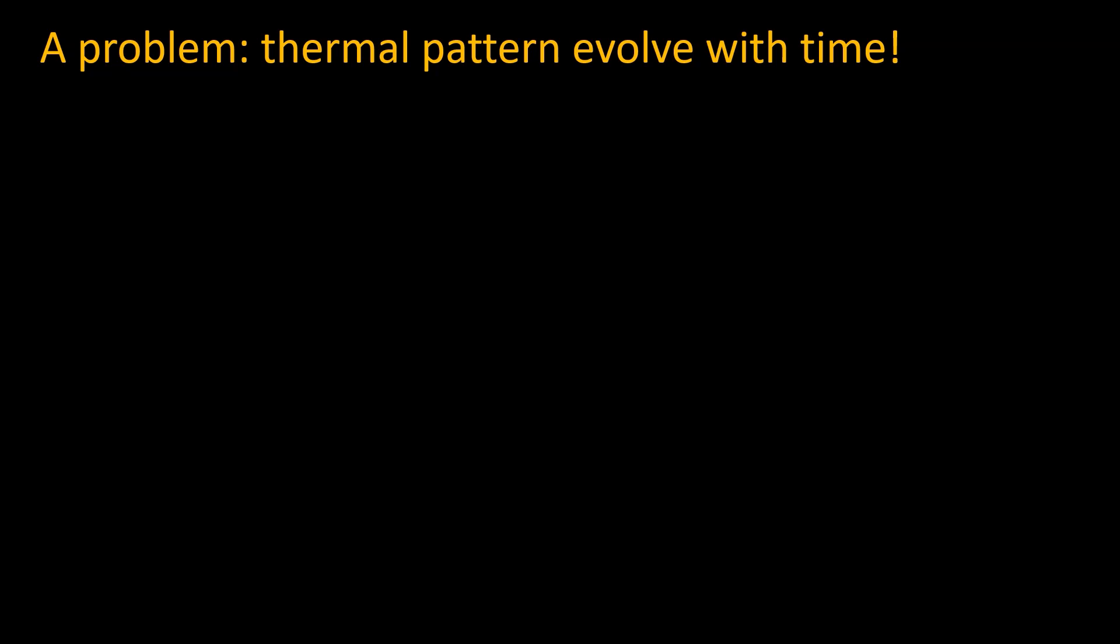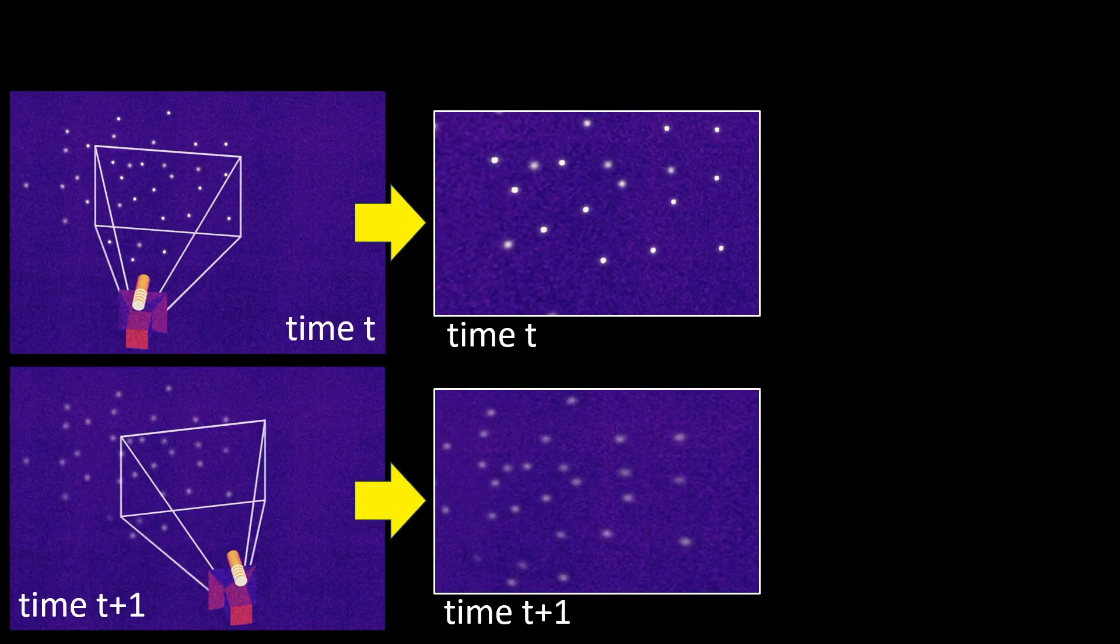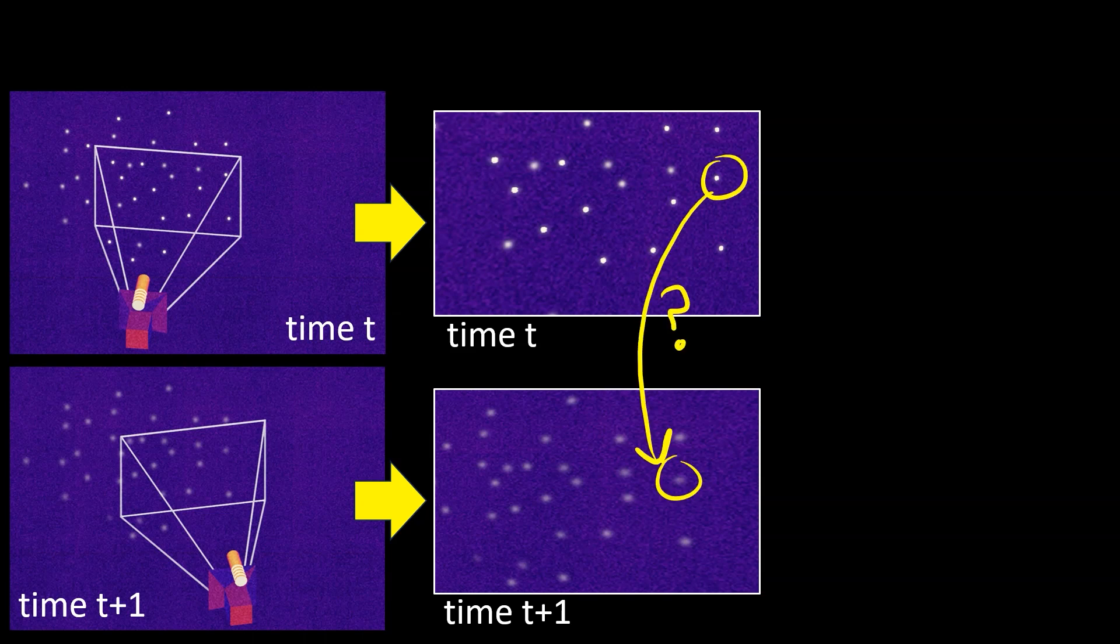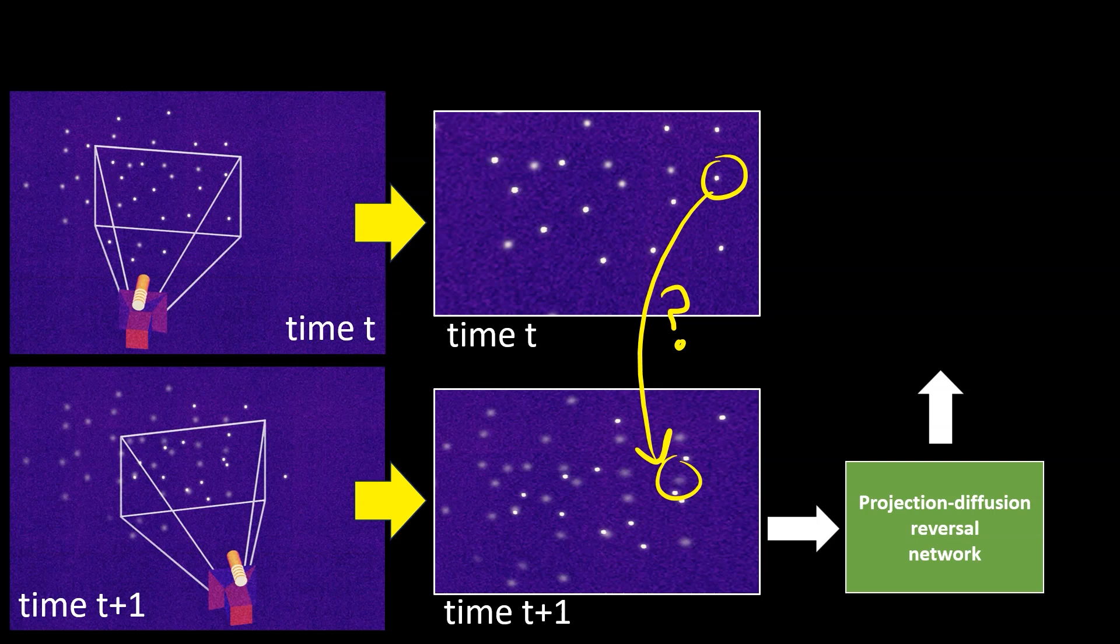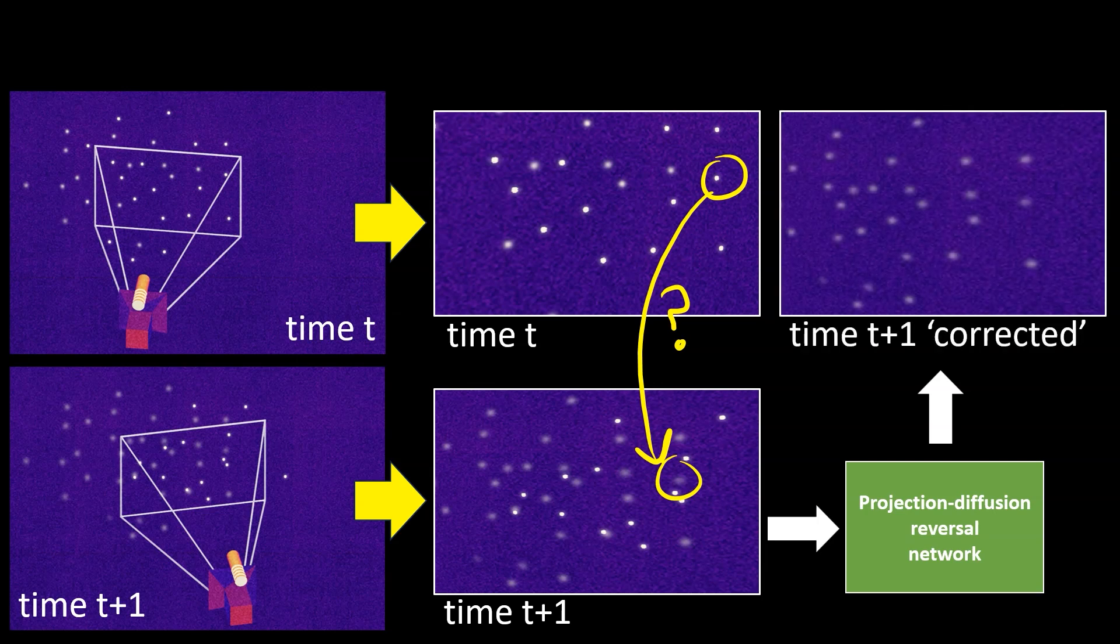But to use thermal patterns we must solve a unique challenge. Unlike their visible light counterparts, thermal patterns diffuse and evaporate with time, which means that a pattern imaged at one time and at another later time do not have a consistent appearance, which many vision algorithms assume. Moreover, because the patterns evaporate entirely after a while, the system must continuously project new pattern points which complicate the matching problem even more. To solve this problem we developed a learning-based approach that takes the new frame, removes the newly added points that did not exist in the previous frame, and reverses the heat diffusion to match the visual appearance of the new frame to the previous one.